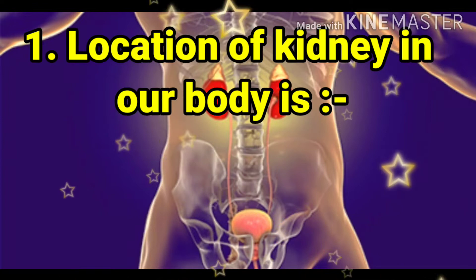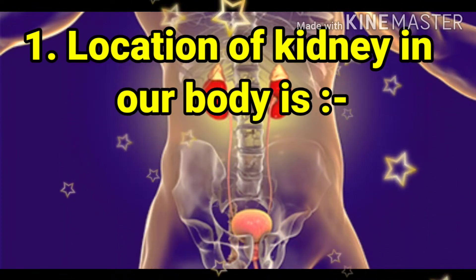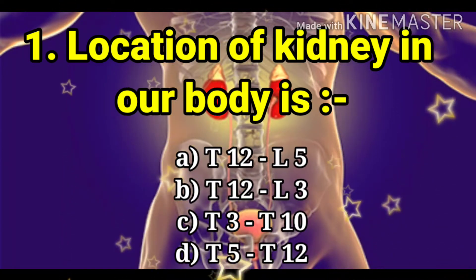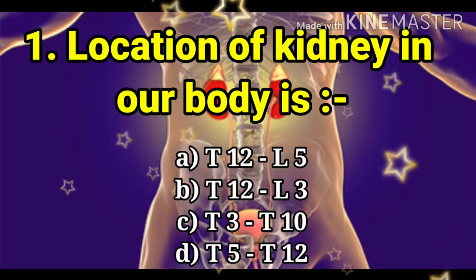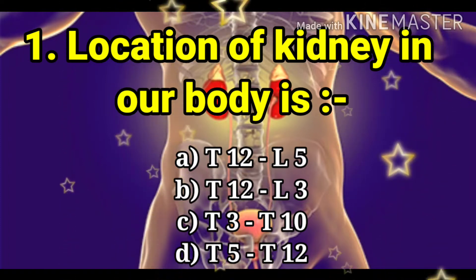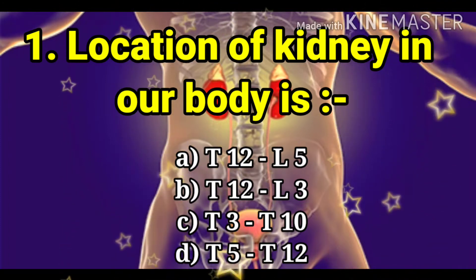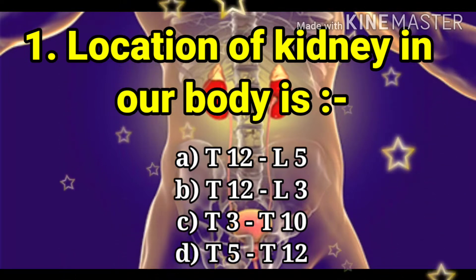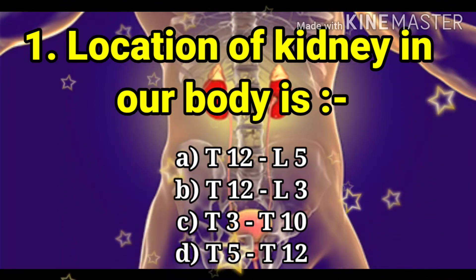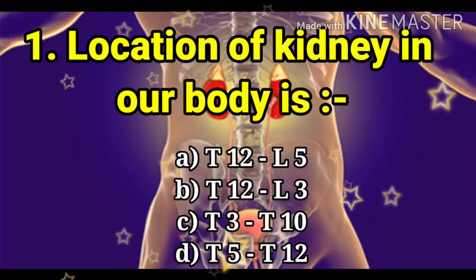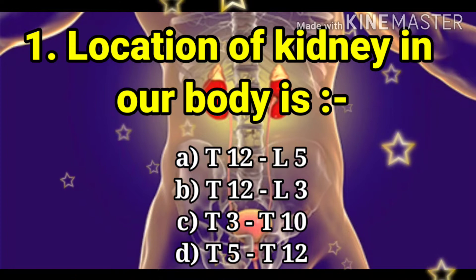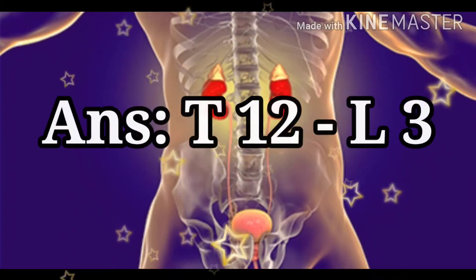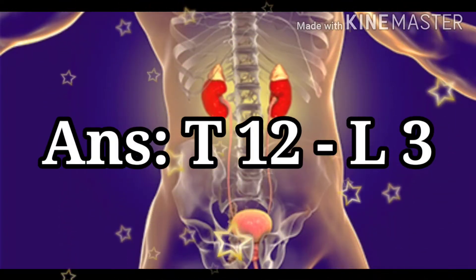The first question: the location of the kidney in our body. The options are T12 to L5, T12 to L3, T3 to T10, and T5 to T12. The answer is T12 to L3.